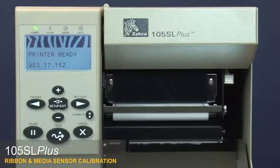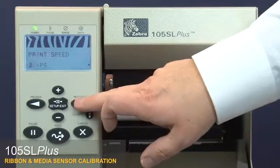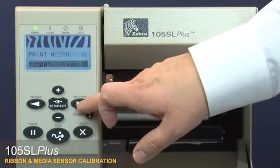105SL Plus ribbon and media sensor calibration. Press setup. Press next to go to the media and ribbon calibrate menu option.